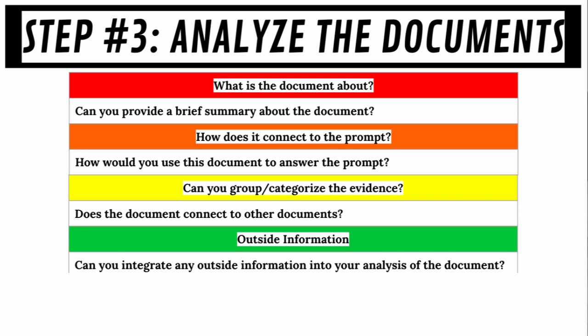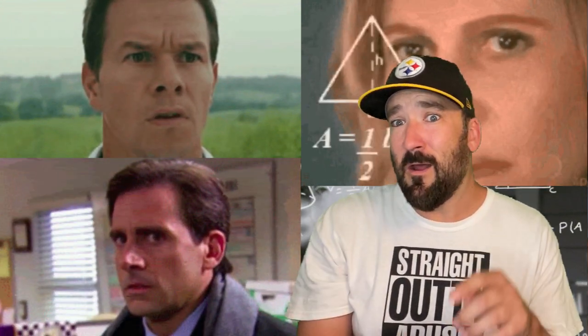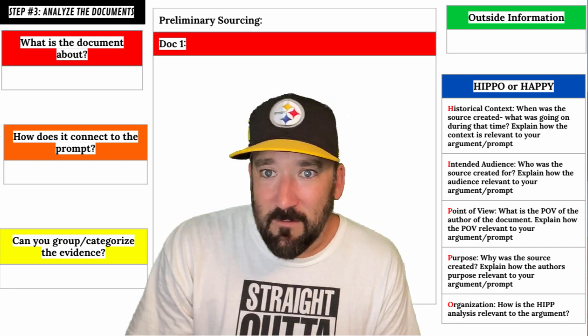Part of your analysis is understanding the relationship between different pieces of historical evidence. A document may offer contradictory evidence that could qualify or modify an argument — group that type of evidence together as well. As you read a document, does it trigger any additional outside information not found in the document? Note that in the margins. Finally, is this document good for the extended analysis portion of the essay? We'll cover that in detail in the next video. When I first started learning about the DBQ, I thought this was a lot to keep in mind for documents you've never seen before on a prompt you couldn't prepare for.